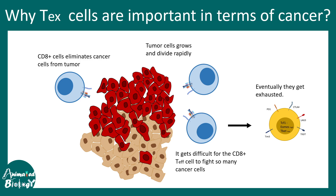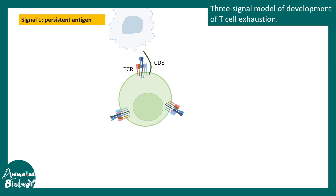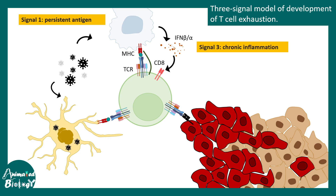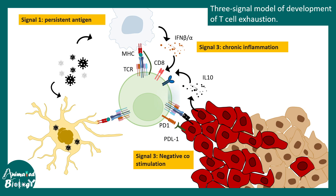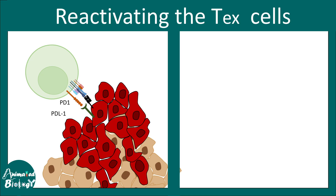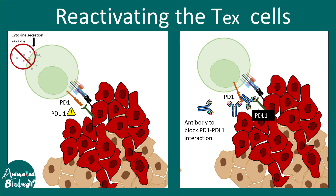Scientists are asking: can they reverse this exhausted behavior? To do that, they must understand why it happens. One cause is persistent antigen exposure; another is chronic inflammation or negative co-stimulatory signals such as PD-1 and PD-1 ligand interaction, which signal T cells to stop. By blocking this interaction using monoclonal antibodies — checkpoint inhibitors — the T cells can no longer be exhausted and regain their killing function.